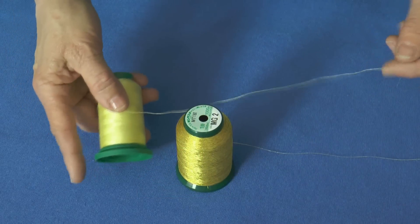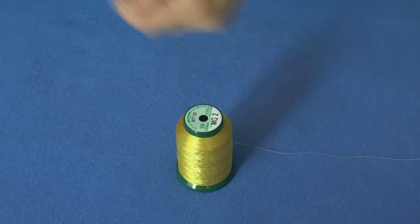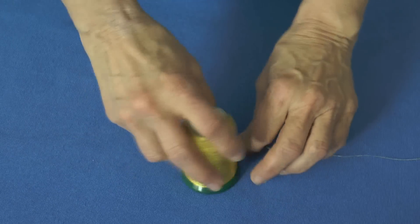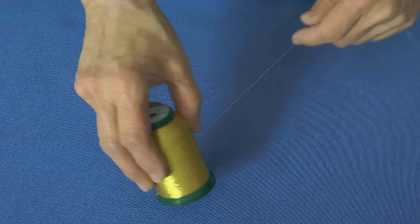Sometimes you get a spool of thread that the snap base isn't working quite right and it's not holding your thread, and other times you may have a cone or spool that doesn't have a snap base.